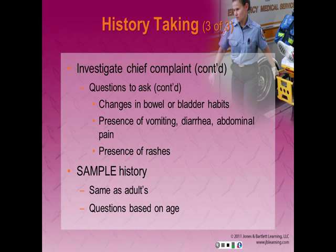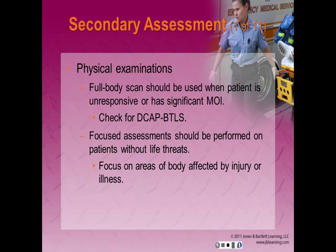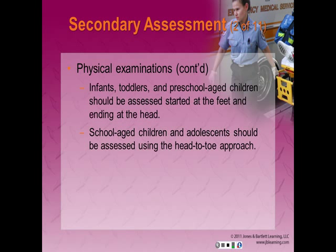Obtain the name and phone number of caregivers if they cannot come to the hospital. Get your SAMPLE history using the same format as for an adult, with questions based on the patient's age and developmental stage. Perform a physical exam as part of your secondary assessment. The full-body scan should be used for patients with potential for hidden injuries, such as those who are unresponsive or have a significant mechanism, checking for DCAP-BTLS. A focused assessment should be performed for pediatric patients without life-threatening illness. Infants, toddlers, and preschool-aged children should be assessed starting at the feet, while school-aged children and adolescents can be assessed using a head-to-toe approach.